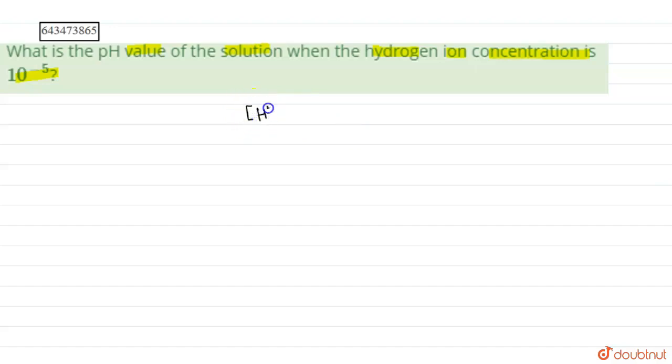We have been given H+ concentration as 10 to the power minus 5, and we know that the formula for pH is minus log of H+ concentration.